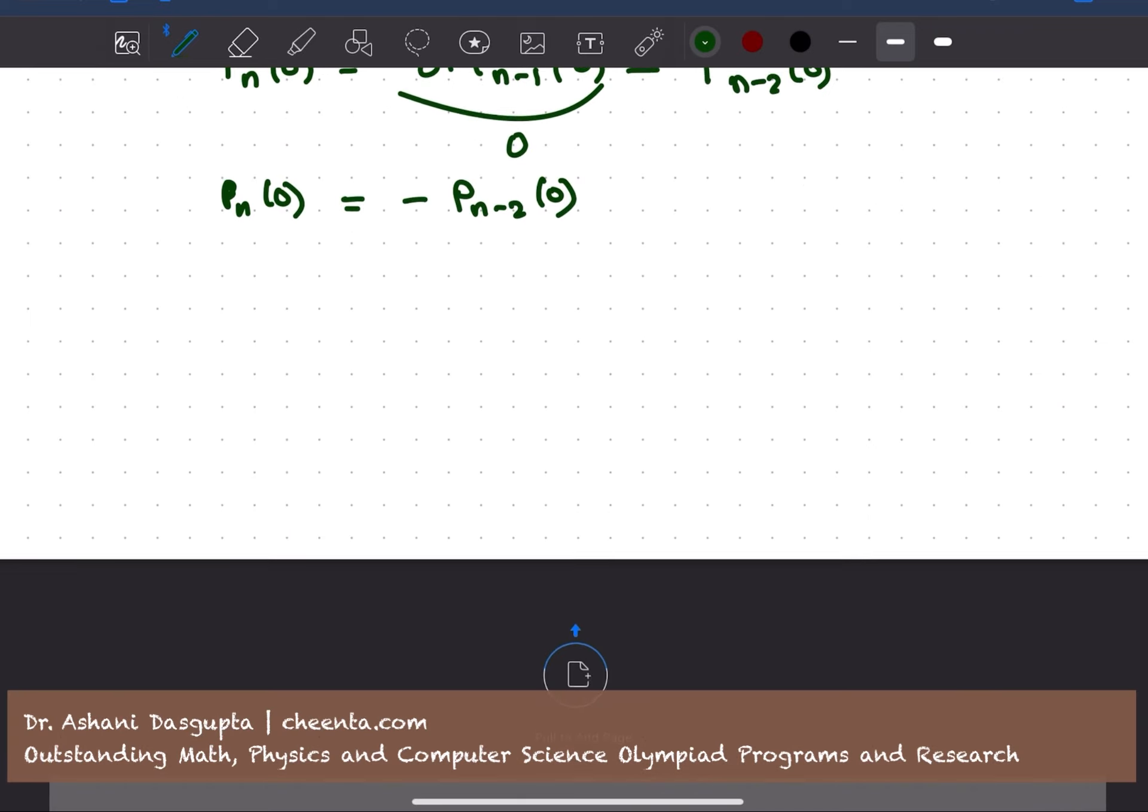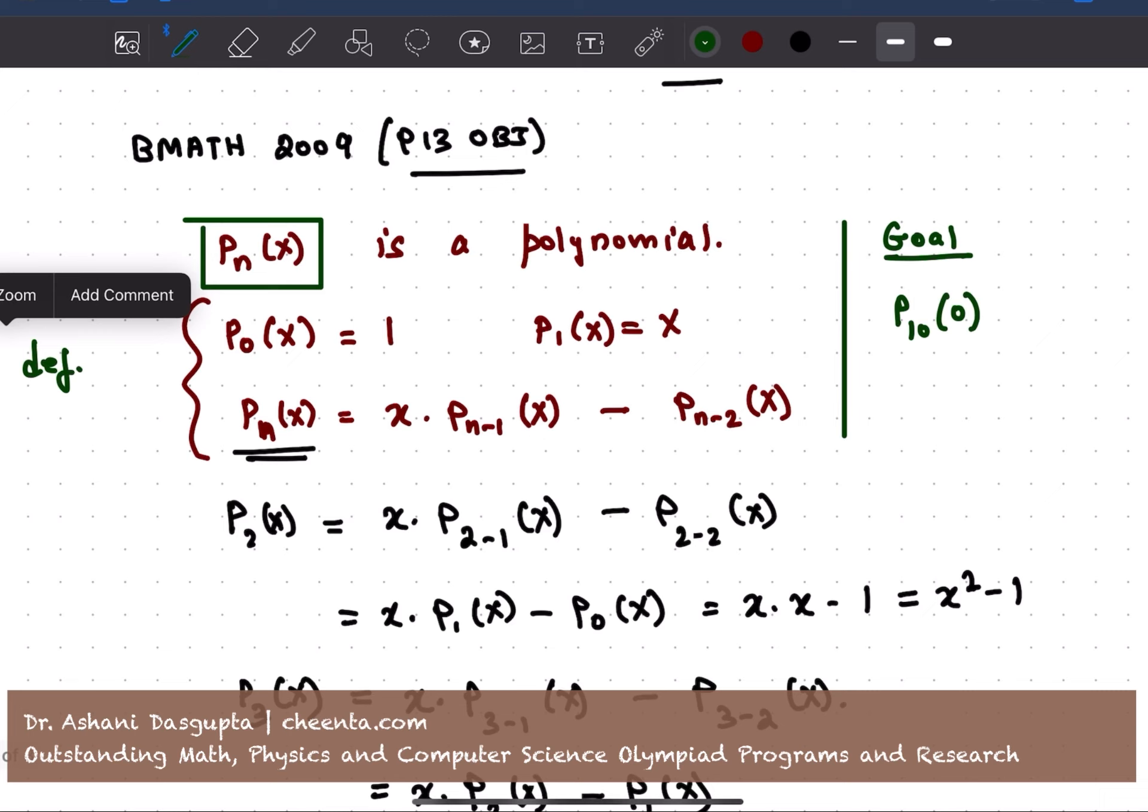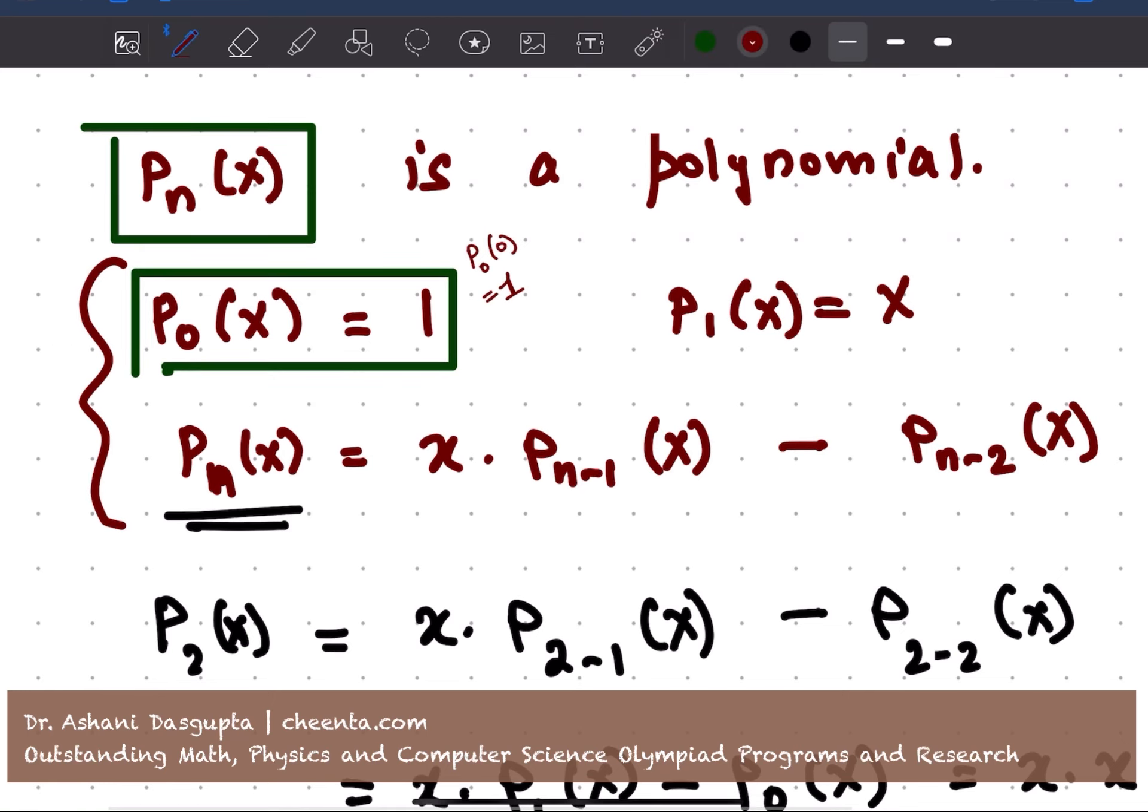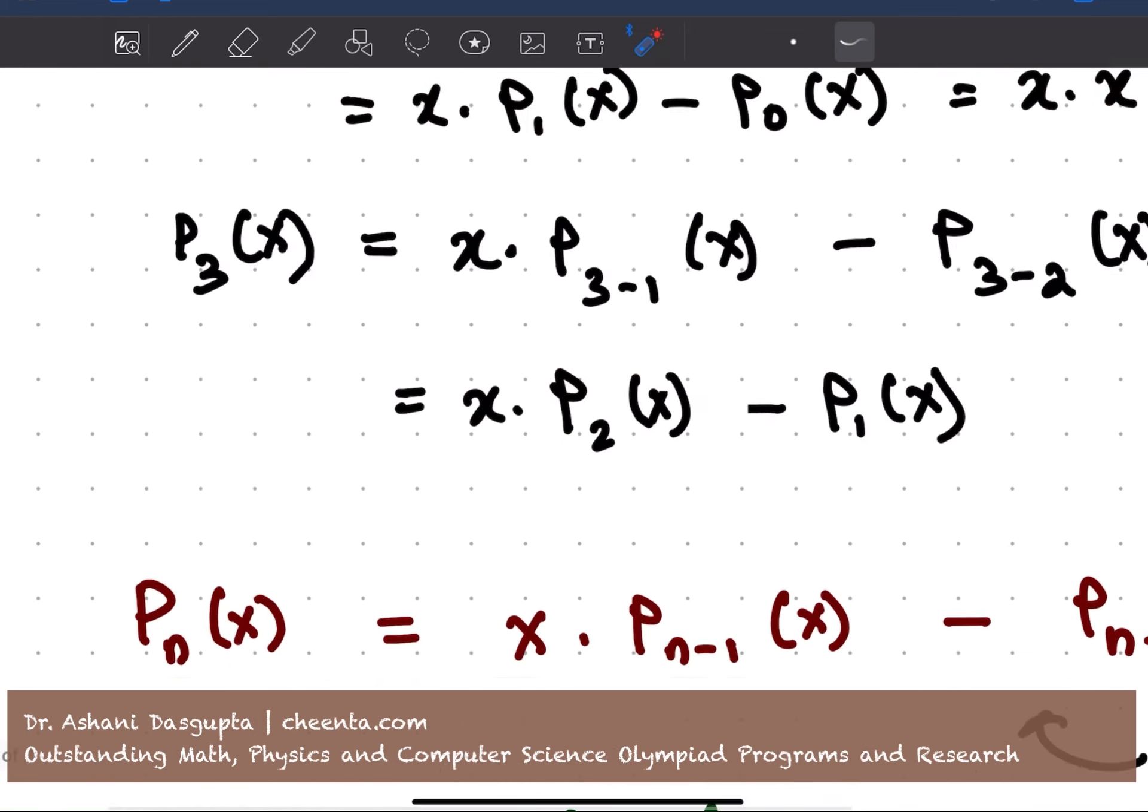That's quite interesting because we know that P_0(x) is 1. Which means if I compute P_0 of 0, that is also 1. That is, if I plug in x equal to 0 here, that will also give me 1. And we also know that P_1 of 0 is 0. Just plug in x equal to 0 here. So P_1 of 0 is 0. So we know that. So now let's come back here.